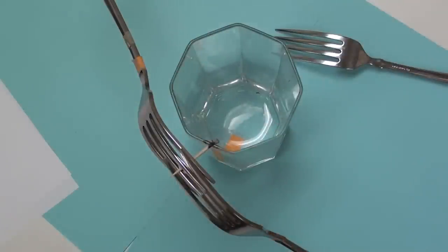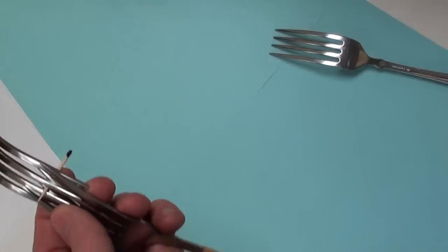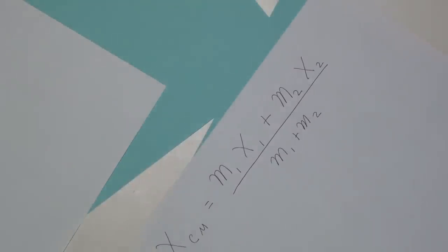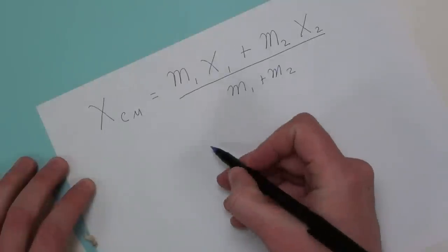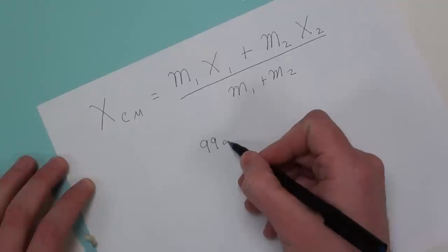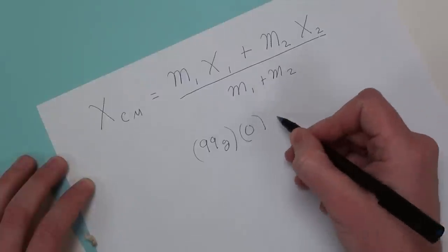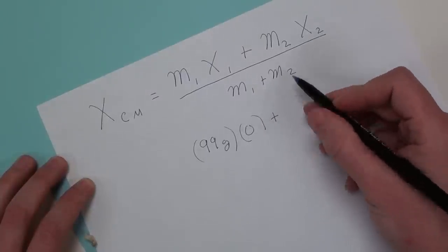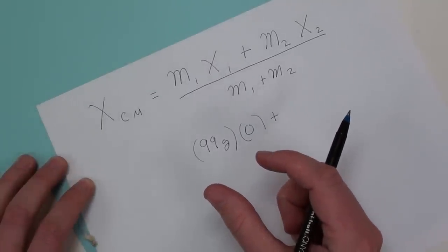So for those of you who are still listening and you want to see the math, I haven't scared you off yet. Let's just take a second and do that, just to show you that the center of mass actually changes very, very little. So let's take the mass of the forks, which was 99 grams, and let's assume that their center of mass is initially at 0, right over the center of the glass.